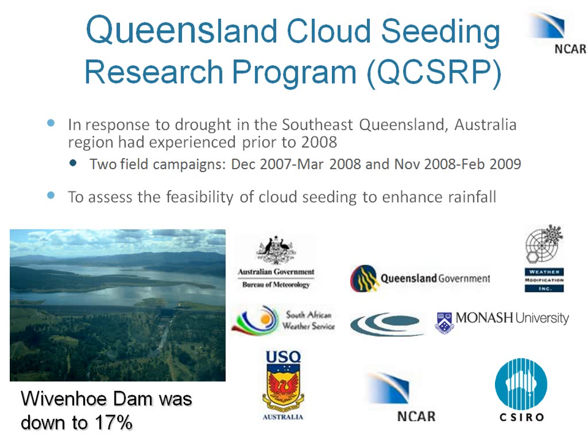This work has been done as part of the Queensland Cloud Seeding Research Program. This program was initiated by the state government of Queensland in response to a drought that the region had been experiencing prior to 2008. We were there for two field campaigns between December 2007 and March 2008, and then again between November 2008 and February 2009. Their primary dam for water storage, Wyvernhoe Dam, was down to 17% — it is currently well over 100%.